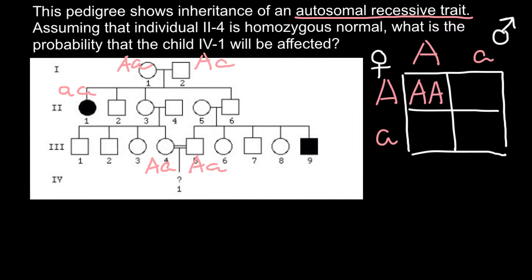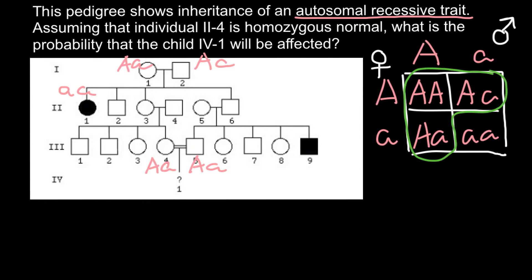From this cross, the possible genotypes are: AA, Aa, Aa, and aa. So the probability for individual 2,3 to be heterozygous — to be a carrier — would be 2 out of 3.